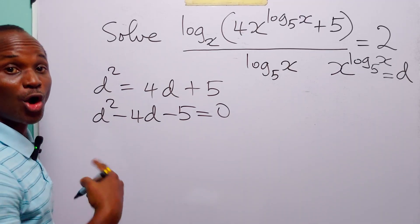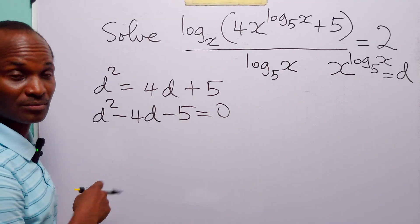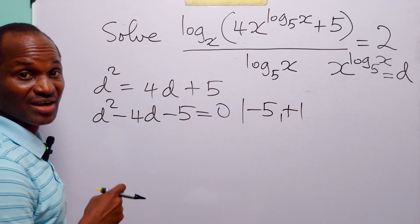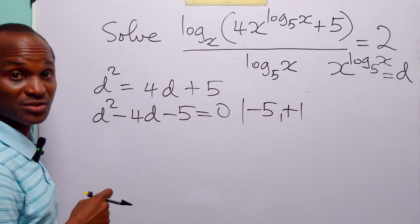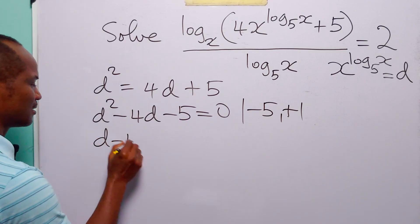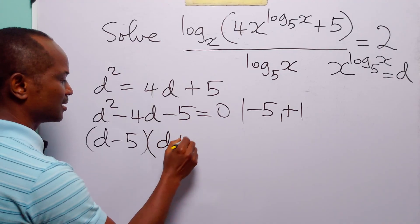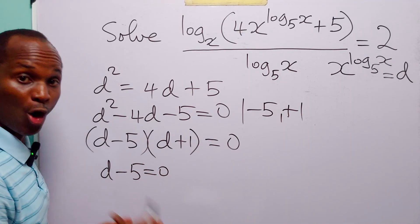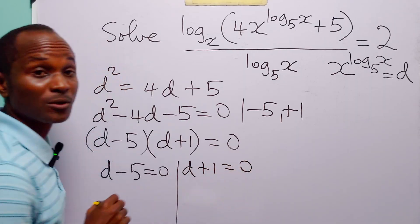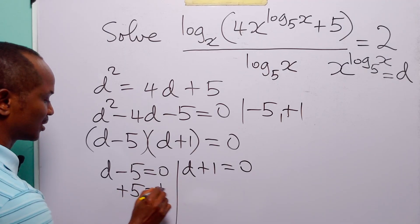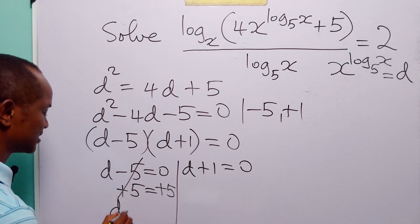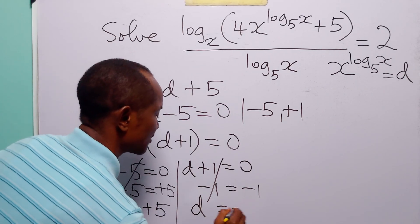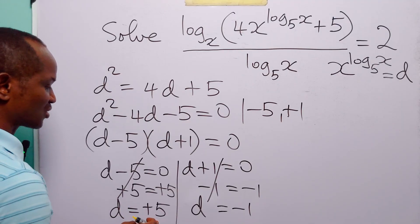Since the coefficient of d squared is 1, all we have to do is find the factors of minus 5 that add up to minus 4. Those are going to be minus 5 and plus 1, because minus 5 times plus 1 equals minus 5, while minus 5 plus 1 equals minus 4. So we can factorize the left-hand side as (d minus 5)(d plus 1) equals 0. From here, d minus 5 equals 0 or d plus 1 equals 0, giving d equals 5 or d equals minus 1.